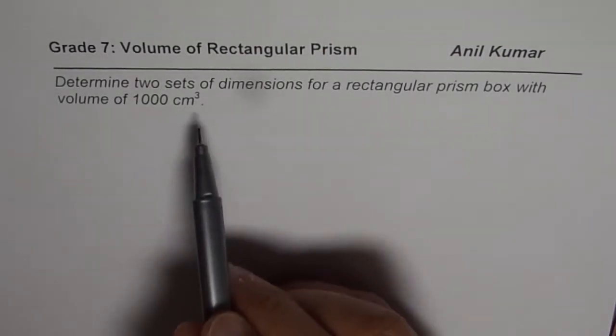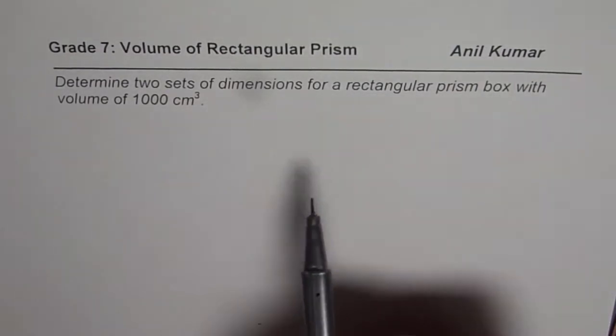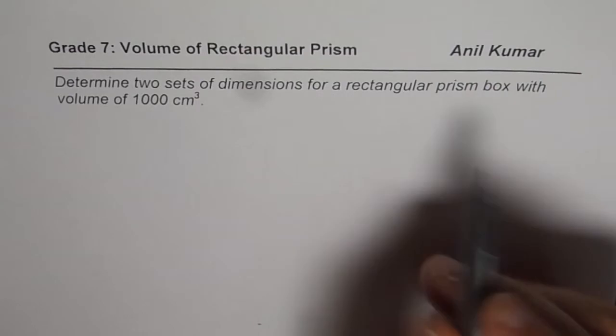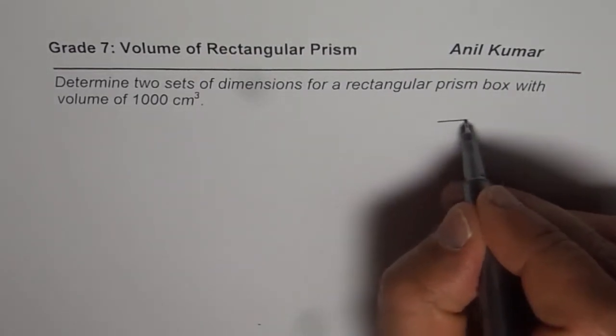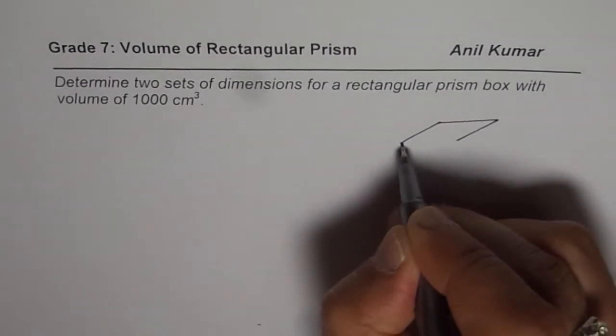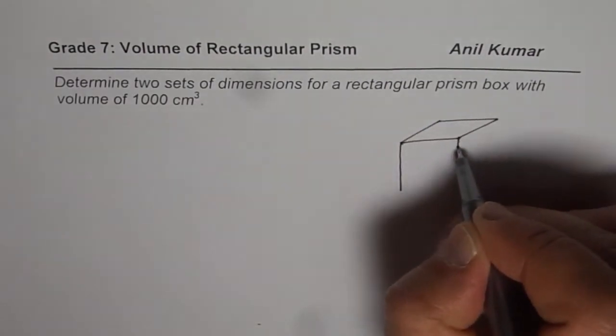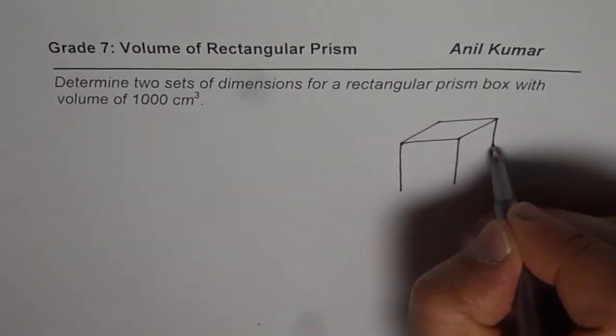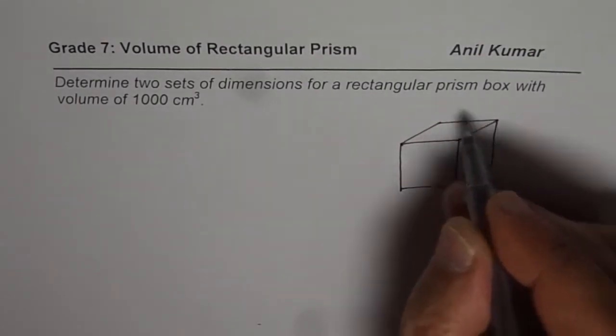Now let me tell you one thing. In questions when I say a box it will normally mean rectangular prism. When I say rectangular prism, it means that, let's say we make a rectangle here and then I will show you how to draw this prism. This is the top portion and then we bring all these sides down and then join these sides. So that becomes a prism.